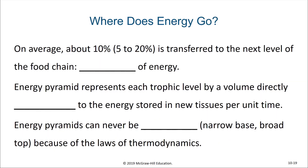On average, only about 10% of the energy is transferred to the next level of the food chain — we call this the pyramid of energy. This means that of the total energy made by the primary producers, only about 10% will be represented within the bodies and biomass of those first-level consumers. And as those first-level consumers are consumed by second-level consumers, only 10% of that first-level consumer energy is represented as biomass in that second level.